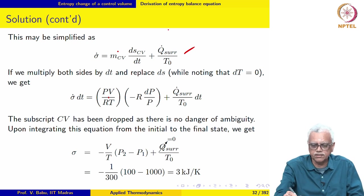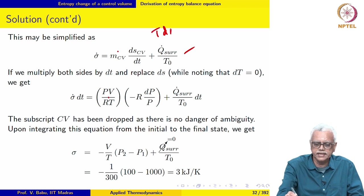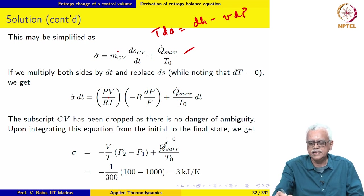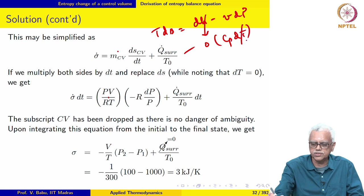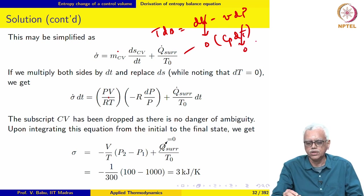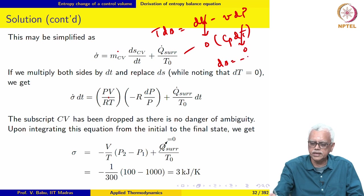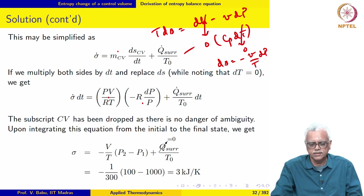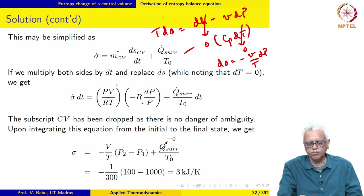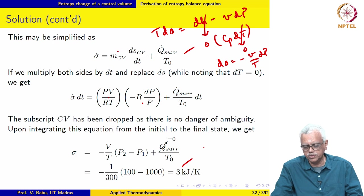We apply the TDS relationship: TdS = dH − V dP, and since the temperature is constant, dH = Cp dT = 0. Therefore TdS = V dP, giving dS = −(V/T) dP, which simplifies further. Multiplying both sides by dT and integrating this equation yields sigma equal to 3 kilojoules per Kelvin.